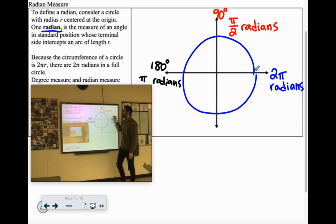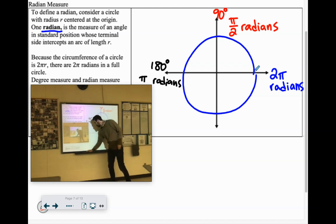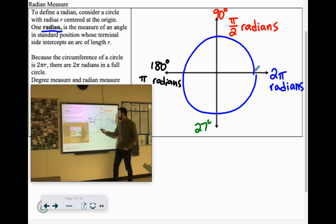So every 90 degrees is one half of a radian. So half radian, two halves radians which is one radian. This would be three quarters, or sorry, three halves radians. So that's 270 degrees would be 3π over 2 radians.